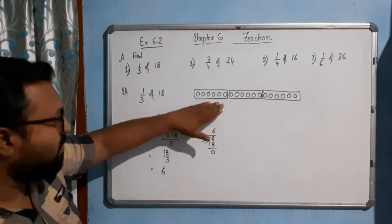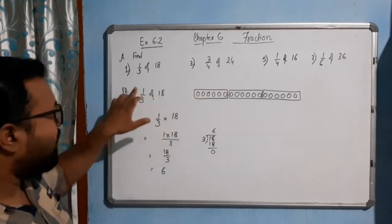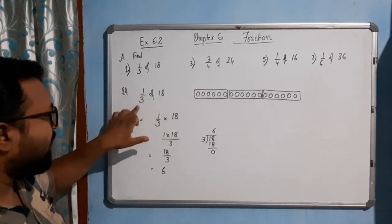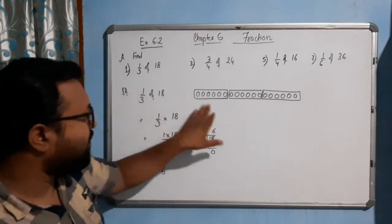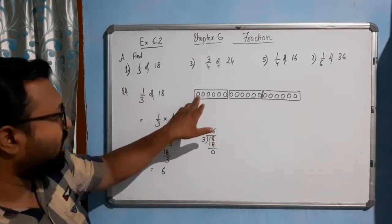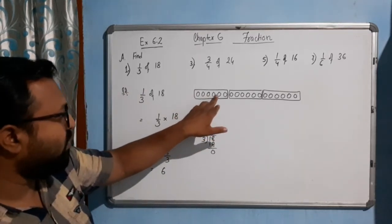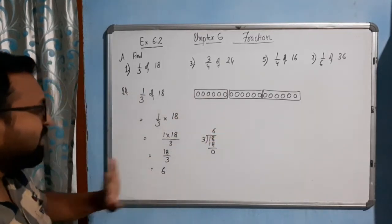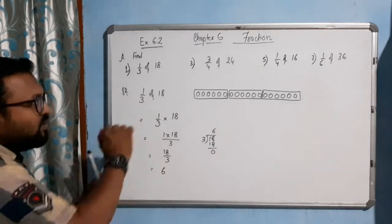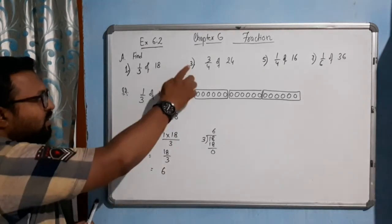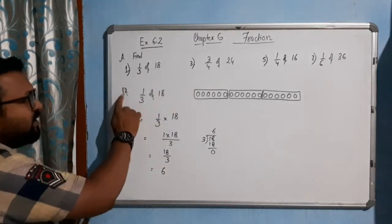And from the figure also we can see: this is 1 part, 2 part, 3 part. 1 part out of 3 parts gives how many balls? 1, 2, 3, 4, 5, 6. I hope you have understood this part. Now come to the next one.